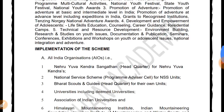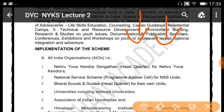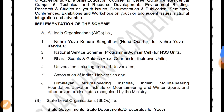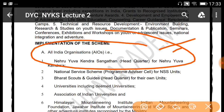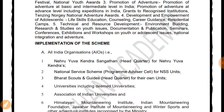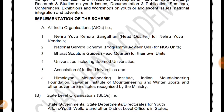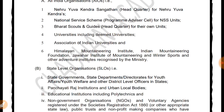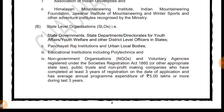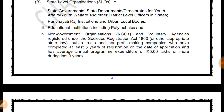For implementation of these schemes, organizations include Nehru Yuva Kendras, National Service Scheme (NSS) units, Bharat Scouts and Guides, universities including deemed universities, Association of Indian Universities, Himalayan Mountaineering Institute, Indian Mountaineering Foundation, and institutes for mountaineering and winter sports. At the state level: state departments, directors of youth affairs, district-level officials, Panchayati Raj institutions, urban local bodies, education institutes, polytechnics, and NGOs registered under the Societies Registration Act 1860.